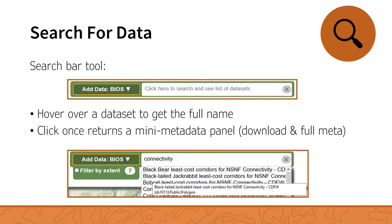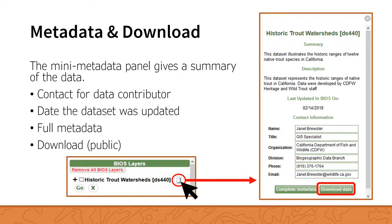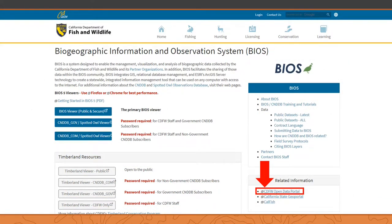Clicking once on an item in the search results opens a summarized metadata panel on the right. From the metadata panel, you can view a summary of the data, find contact information for the contributor, see when the data was last updated, view the full metadata, and download the data. When you click the download button, the GIS files for the entire dataset are saved to your computer. If the dataset is secure, the download button will be grayed out and you will need to contact the contributor or us here at BIOS. Another option for downloading is the CDFW Open Data Portal; to access it from our BIOS webpage, click the CDFW Open Data Portal link under related information.